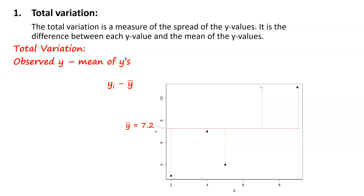The total variation in the data is defined by thinking: what is the average Y? If I take those Y values and find the average, I get 7.2. From 7.2, how far off are all of these points? You can visualize total variation as all of the vertical distances from each point to this grand mean. When there's a Y with a line over it and no subscript, we call that the grand mean — the mean of all the Y's. That's the total variation.